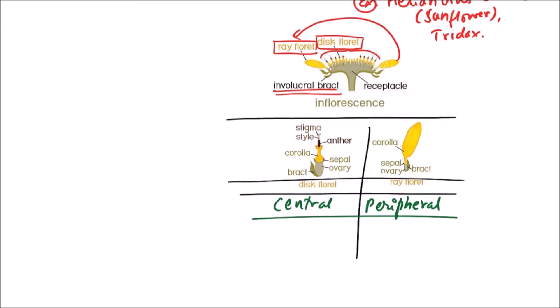These central disc florets are bisexual. We can observe the anther and the ovary, stigma, and style. But the peripheral ray florets are either sterile or female.